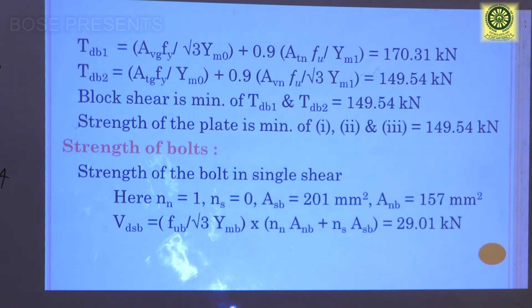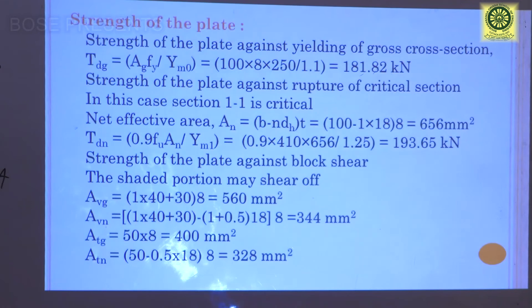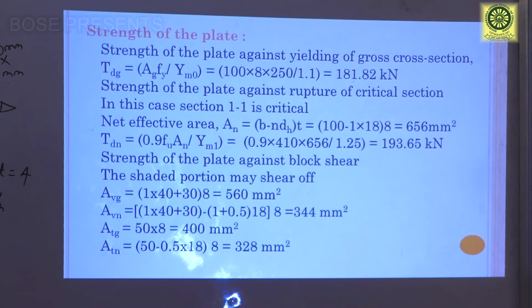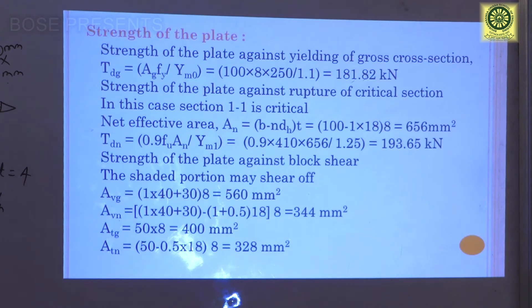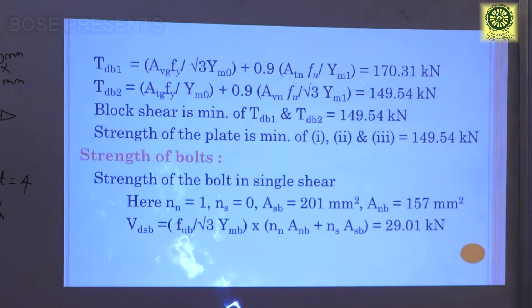TDB2 = 149.54 kN is the governing block shear strength. The strength of the plate is the minimum of: TDG (yielding) = 181.82 kN, TDN (rupture) = 193.65 kN, and TDB (block shear) = 149.54 kN. So the plate strength is 149.54 kN.